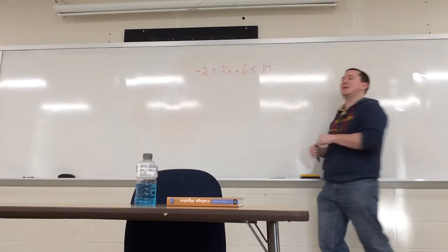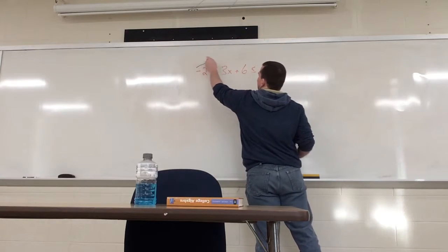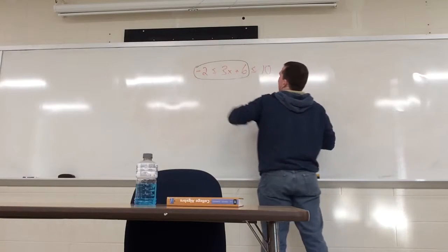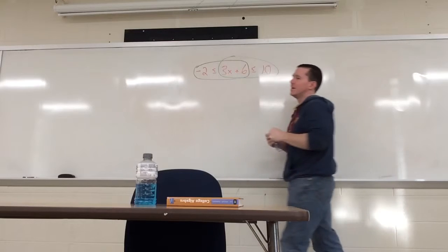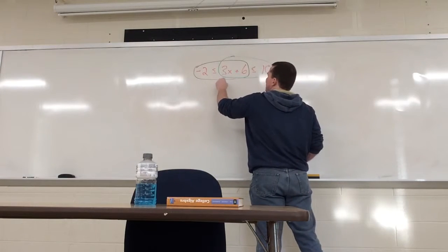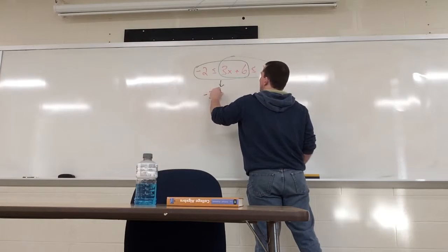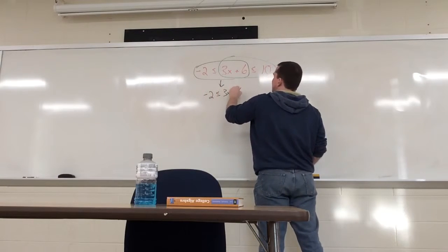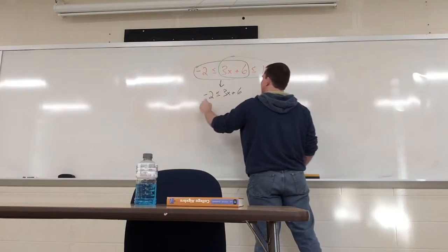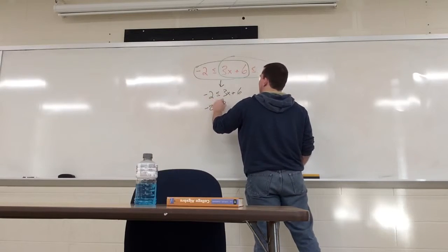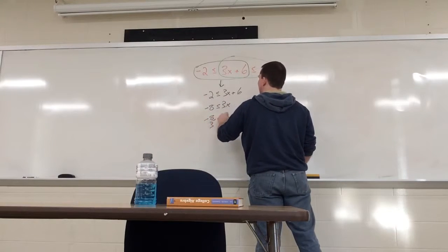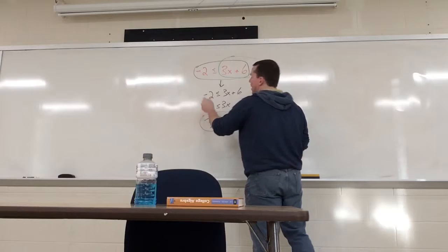One way to do this is to see it as two inequalities. Negative 2 is less than or equal to 3x plus 6. And 3x plus 6 is less than or equal to 10. Solve both of them separately. And thankfully I have more than one color. So we'll solve this one. Negative 2 is less than or equal to 3x plus 6. How do you solve it? Isolate the x, so subtract the 6. Minus 2 minus 6 is minus 8. Divide the 3. Negative 8 over 3 is less than or equal to x. There we go. Simple.